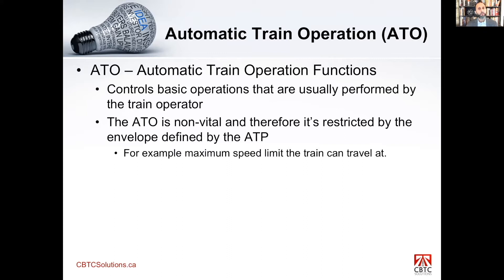Here's how it works: the ATO is controlling the train non-vitally — it controls the propulsion, the braking, and the door opening and closing. But the ATP part of the train board system is operating alongside it. The ATP specifies the speed at which the train is permitted to move, and the ATO must honor that speed. If the ATO violates the speed limit, the ATP will brake the train. Similarly, if the train arrives at a station and the ATO tries to open the door when it's not safe, the ATP stops it.